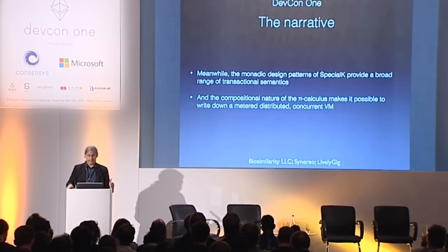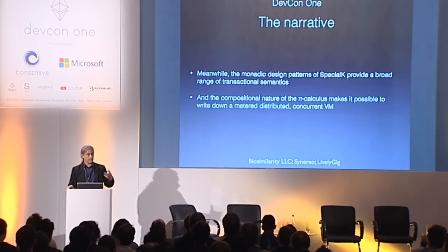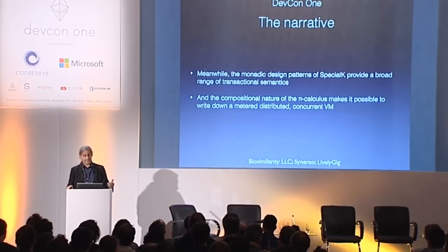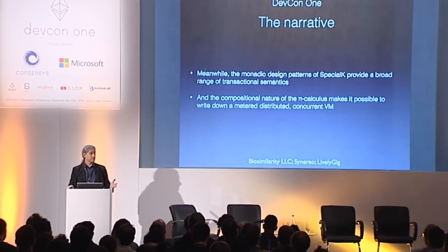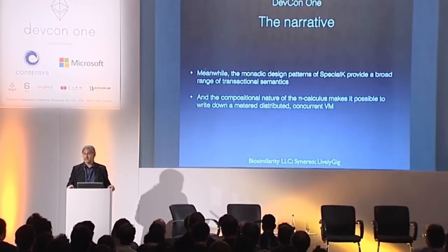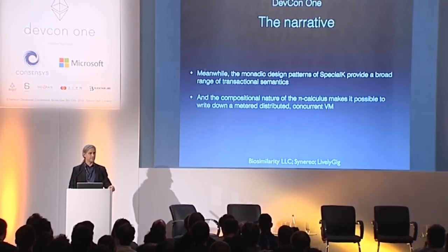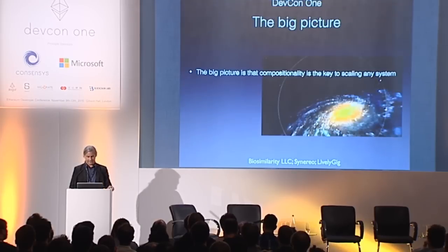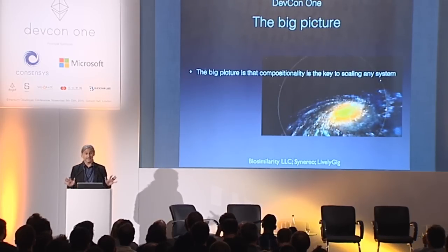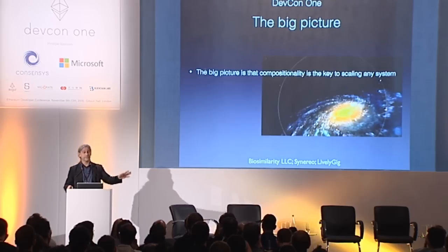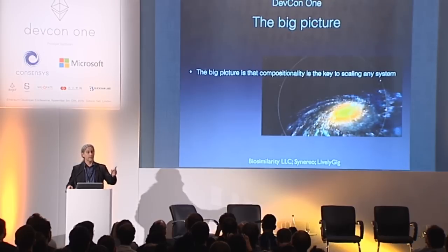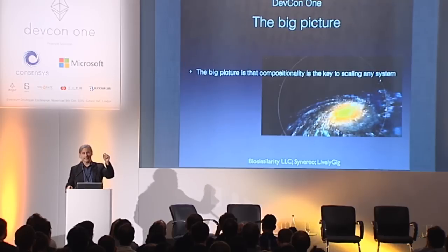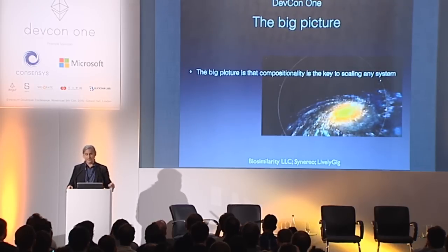Additionally, the compositional nature of the pi calculus makes it possible to write down in a single page a metered distributed concurrent VM. The big picture is that compositionality is the key to scaling any system. If you forget everything else in this talk, I'm hoping to plant that seed in your mind. So what the heck is compositionality?